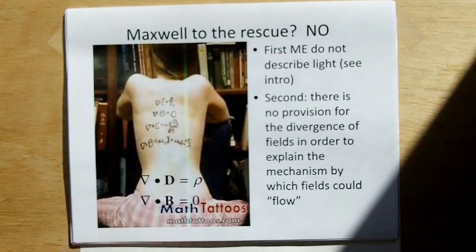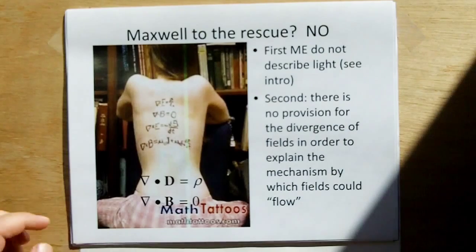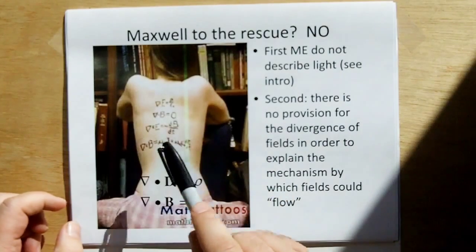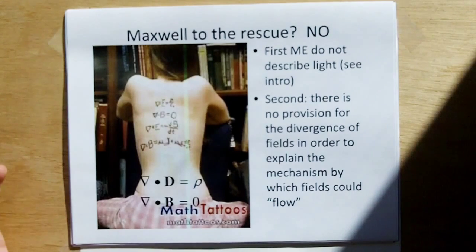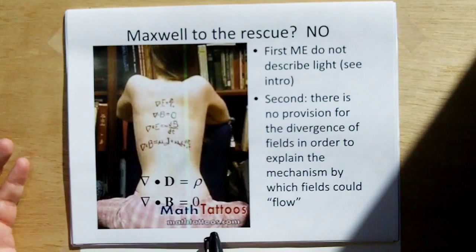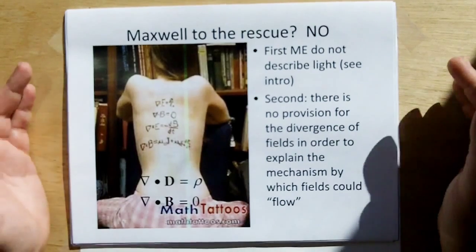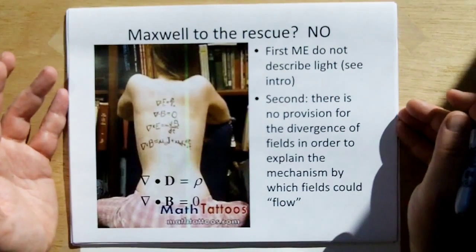And so, do we have Maxwell to the rescue? No, we don't, because by the way, this is a woman that allegedly has a tattoo of Maxwell's equations on her back. Okay? I picked it up because I got mathtattoos.com, and I'm like, okay, that's ridiculous. That's ridiculous enough for me to include as a slide.